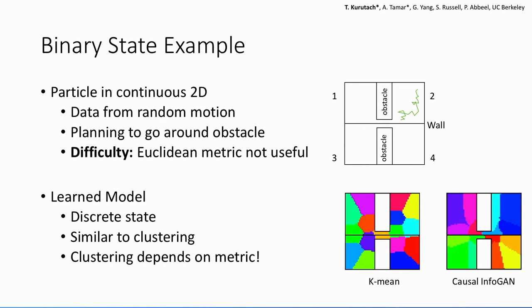Whereas if you use Causal-InfoGAN, you can think of it as a mapping from the observation to the discrete state, and this is kind of like a clustering algorithm. So you can learn a smooth and well-separated boundary between the top clusters and the bottom clusters.